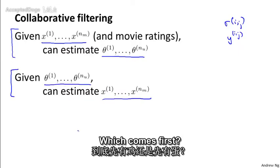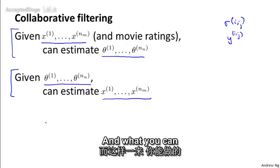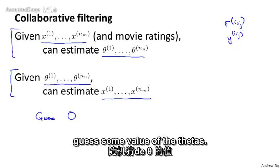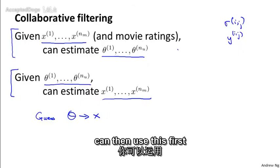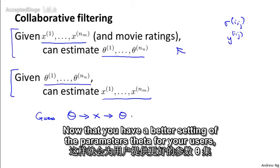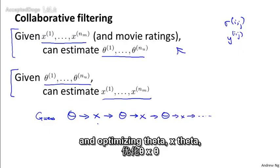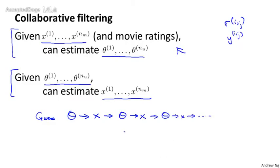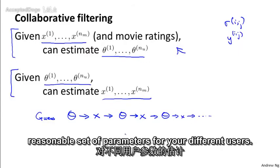So this is kind of a chicken and egg problem. Which comes first? If we can get the thetas, we can learn the x's. If we have the x's, we can learn the thetas. And what you can do, and this actually works. What you can do is, in fact, randomly guess some value of the thetas. Now based on your initial random guess for the thetas, you can then go ahead and use the procedure that we just talked about in order to learn features for your different movies. Now given some initial set of features for your movies, you can then use this first method that we talked about in the previous video to try to get an even better estimate for your parameters of thetas. Now that you have a better setting of the parameters theta for your users, we can use that to maybe get an even better set of features and so on. You can sort of keep iterating, going back and forth and optimizing theta, x theta, x theta, x, and this actually works. And if you do this, this will actually cause your algorithm to converge to a reasonable set of features for your movies and a reasonable set of parameters for your different users.